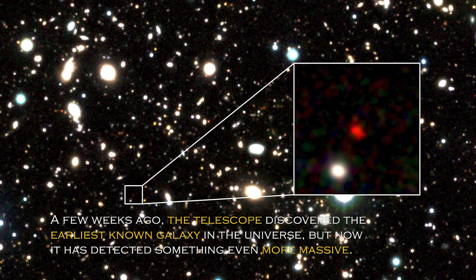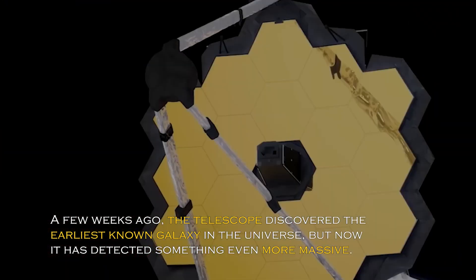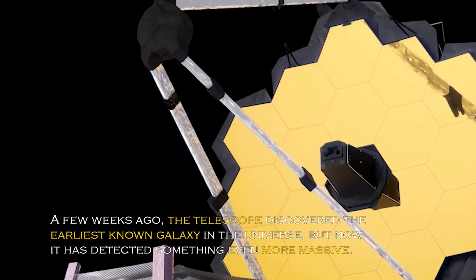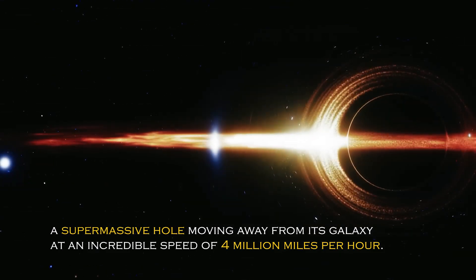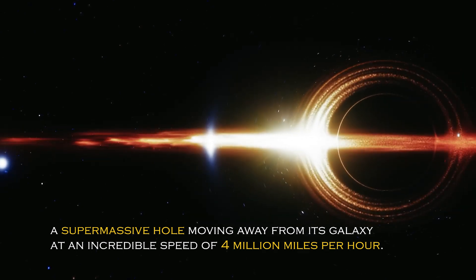A few weeks ago, the telescope discovered the earliest known galaxy in the universe, but now it has detected something even more massive – a supermassive black hole moving away from its galaxy at an incredible speed of 4 million miles per hour.